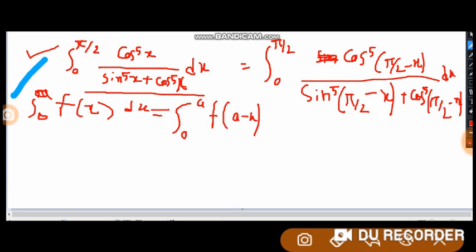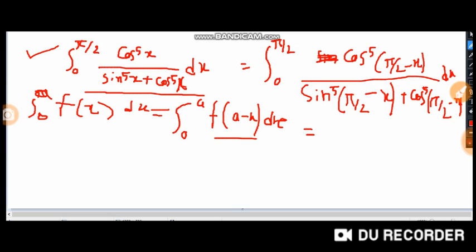This property has been used in this process, and after using this property, the integration becomes 0 to π/2. Cos will be replaced with sin and all sin will be replaced with cos, from elementary property of trigonometry. So our equation becomes 0 to π/2, sin^5(x) divided by cos^5(x) plus sin^5(x) dx.